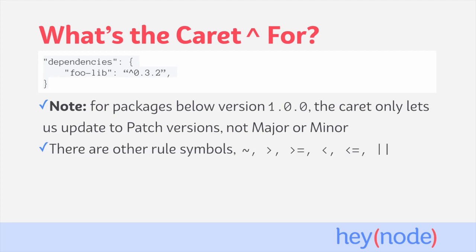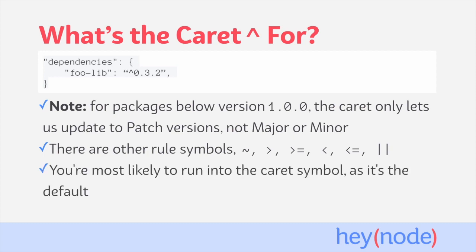There are also other rule symbols, like the tilde sign, greater than, greater than or equal to, less than, less than or equal to, and the or operator. The tilde symbol acts like the caret, but will only allow updates to patch versions within a minor version — so the tilde locks the major and minor versions but accepts the latest available patch version. The greater than and less than symbols accept any version greater than or less than the specified version, and the or operator combines sets of other rules together. You're most likely to run into the caret symbol, though, because it's the default used when you npm install a package.